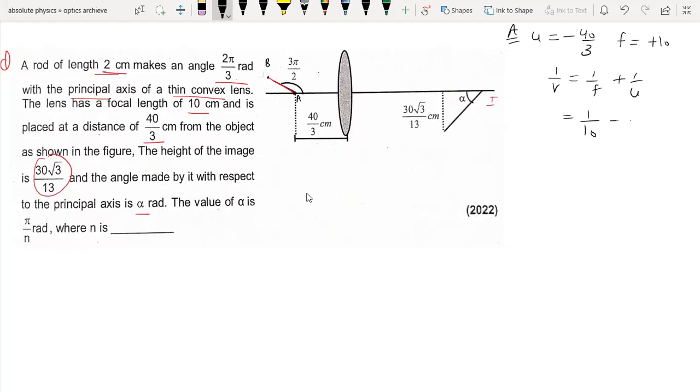So this is 1 by 10 plus 1 by minus 40 by 3, which gives us 4 minus 3.